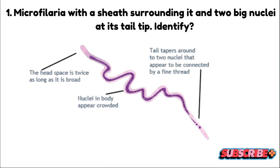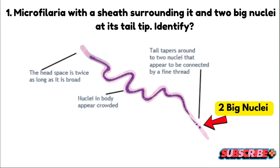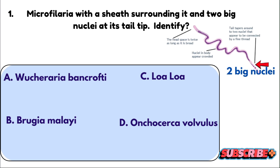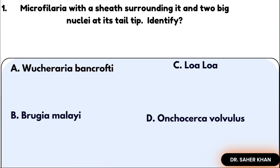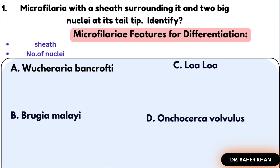Here's the question: Microfilaria with a sheath surrounding it and two large nuclei at its tail tip — identify the organism. You must know that filarial worms are differentiated based on two key features: the sheath and the number of nuclei.